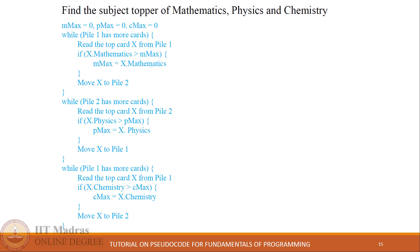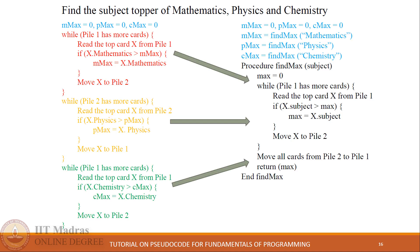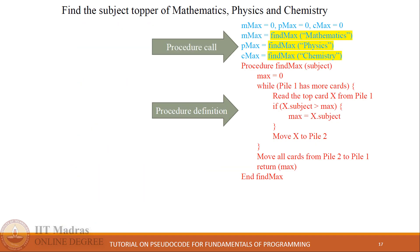The next topic is procedures. Consider this problem statement to illustrate the importance of procedures. The given pseudo code finds the subject toppers of mathematics, physics, and chemistry. If we observe carefully, the same code with different subjects appears in three while loops. Therefore it can be converted into a procedure with subject name as a parameter. There are two important components: the procedure call and the procedure definition.